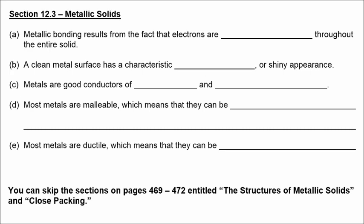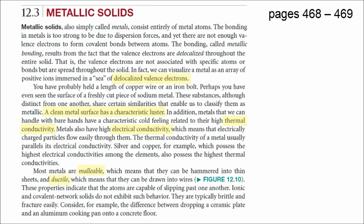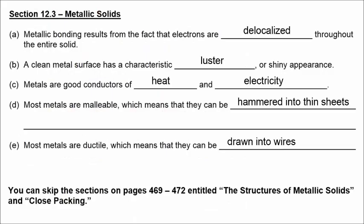Section 12.3, metallic solids. Metallic bonding results from the fact that electrons are delocalized. This is on page 468 and 469. A clean metal surface has a characteristic luster, which means it's shiny, and they are good conductors of both heat and electricity. It says that most metals are malleable, which means they can be hammered into thin sheets, and ductile, which means they can be drawn into wires.